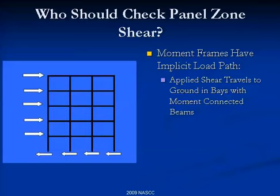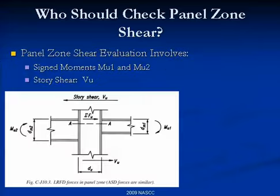Now, who should look at panel zone shear? Here's a brace frame structure — you can feel the load path; lateral loads are applied and come to the ground. Let's say every joint is a moment connection. To check panel zone shear, as shown right in the 13th edition, you need signed moments for the beam on the left and the beam on the right. The dead load moment would be in one direction, somewhat offset by the wind load moment. Plus you need the story shear. The people really equipped to do this calculation are those with access to the computer program who know the concurrent case for Mu2 and Mu1, along with the story shear.